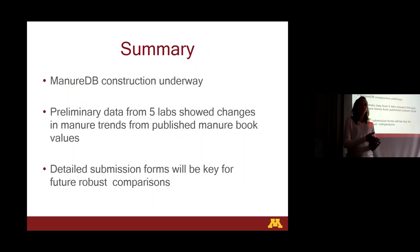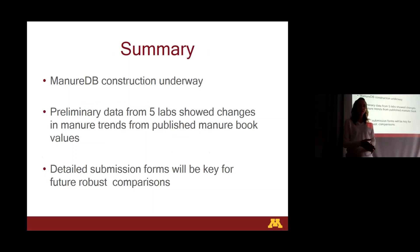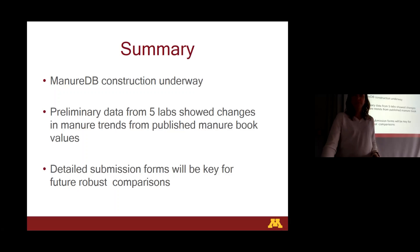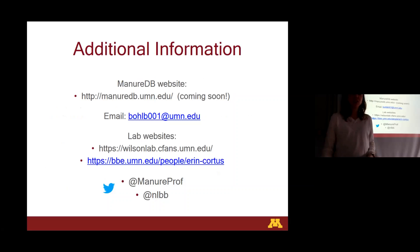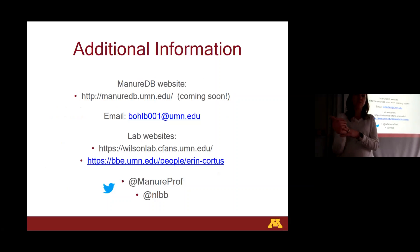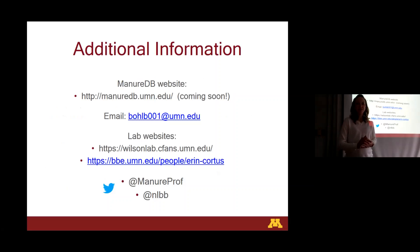To sum it all up: our ManureDB construction is underway. We have looked at some preliminary data from five labs showing there have been changes in manure trends from previously published manure book values, and we know detailed submission forms will be key for future robust comparisons. We do have a domain name — it's going to be manurodb.umn.edu eventually.